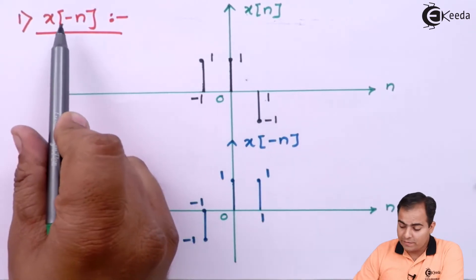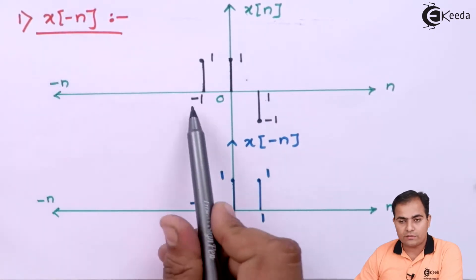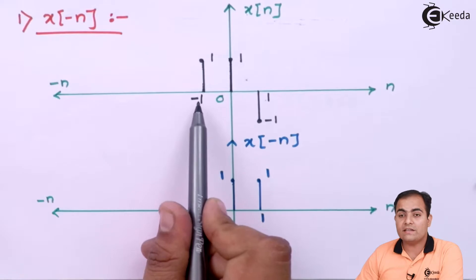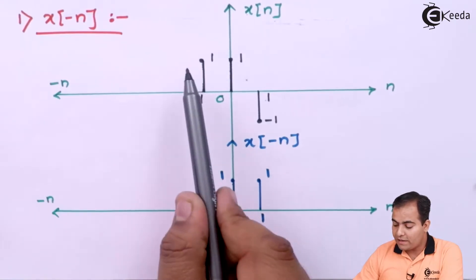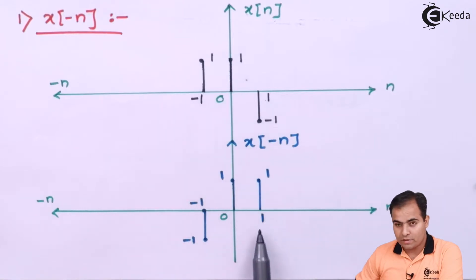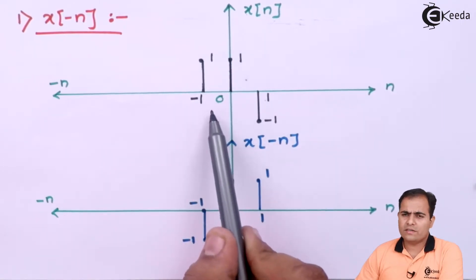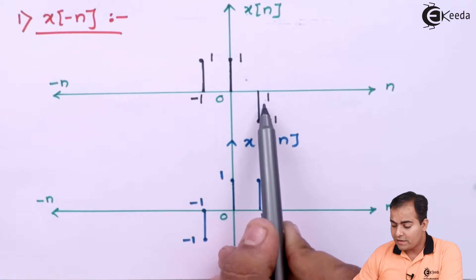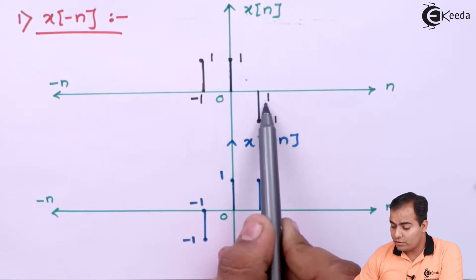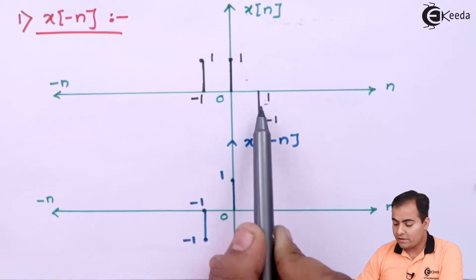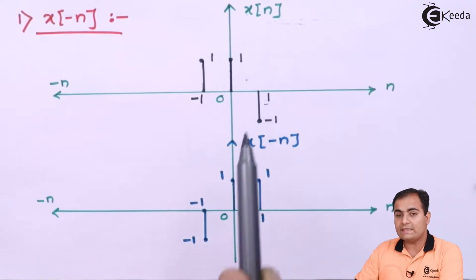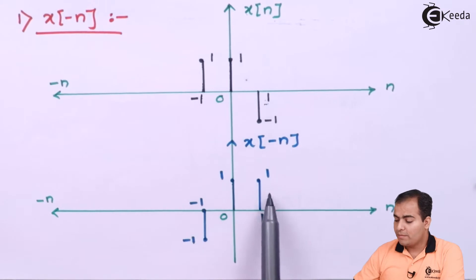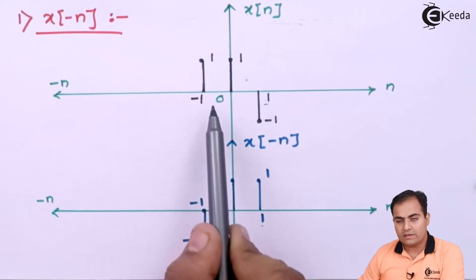To perform the mirror image, simply multiply minus n with each instant of time. If we multiply minus with minus 1, the new location is 1 — so this sample shifts to the right at instant 1. The origin remains in place. For the sample at 1, multiplying by minus gives new location minus 1, with amplitude unchanged at minus 1. So minus 1 is available at 1, 1 is available at minus 1, and origin stays in place.